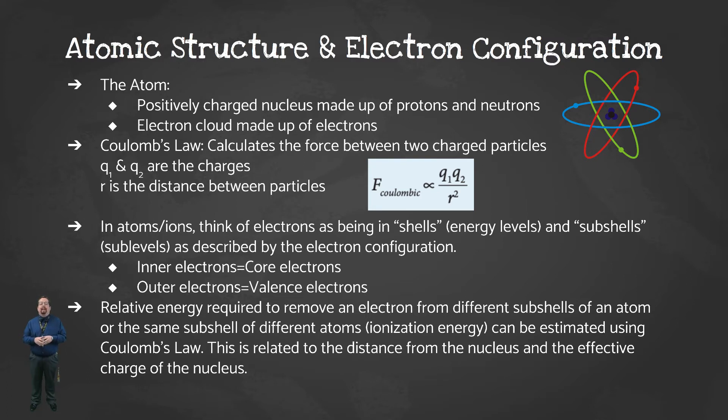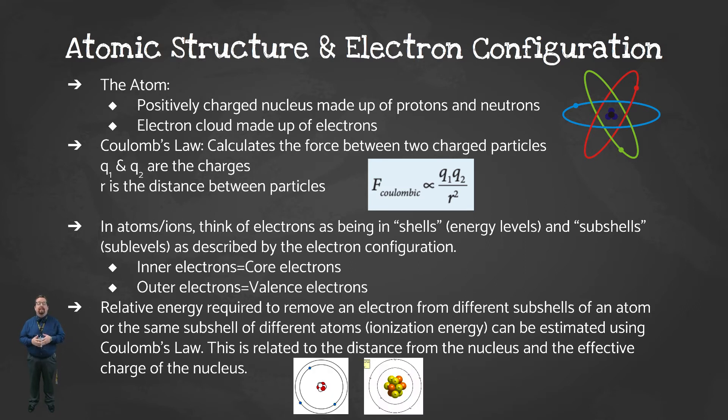You can also compare the electrons in the same subshell of different atoms. For example, lithium compared to nitrogen. Both of these atoms have their valence electrons in the same energy level, so the distance between the nucleus and those electrons should be about the same. But lithium only has one electron in its outer shell, and it has four less protons in its nucleus. The nucleus doesn't have as high of a charge to pull that electron towards it.